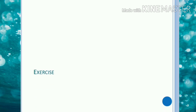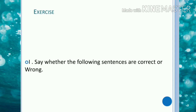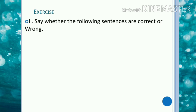Here comes the exercise. Say whether the following sentences are correct or wrong. Sentence number 1: 'He is having a BMW car.' Having is used here in continuous tense. When 'have' is used to show possession, you cannot use it in continuous form. So the correct usage is 'he has a BMW car.'